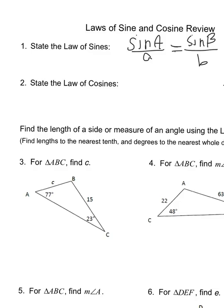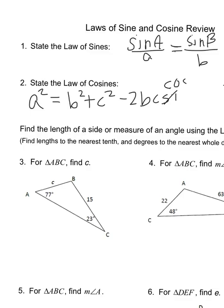The law of cosines is: A squared equals B squared plus C squared minus 2BC cosine of A. A, B, and C are all interchangeable — if you have B squared by itself, it's going to be A squared plus C squared minus 2AC cosine of B. The side that's by itself is always opposite the angle.